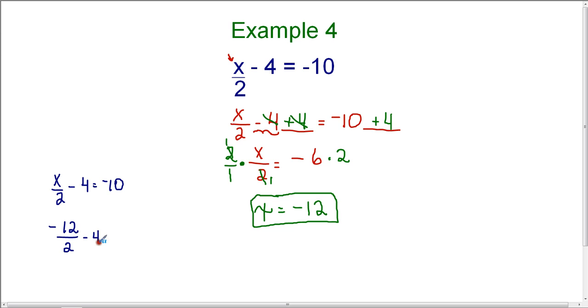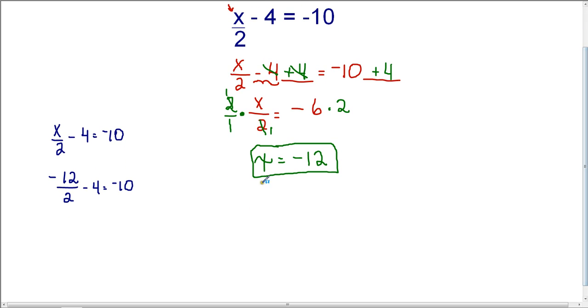And bring down the rest of the problem. Now I need to evaluate. Negative 12 divided by 2 is negative 6, so I have negative 6 minus 4 equals negative 10.